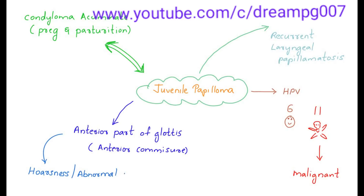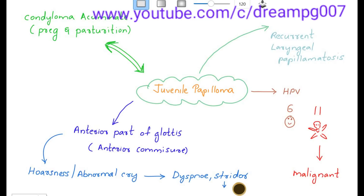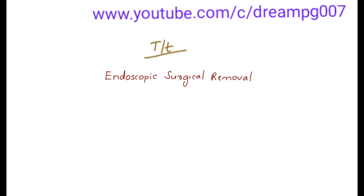As it involves the anterior part of the glottis, it presents with hoarseness or abnormal cry, which eventually leads to dyspnea, stridor, and respiratory obstruction. Treatment is with endoscopic surgical removal, and most commonly carbon dioxide laser is used in the surgery.